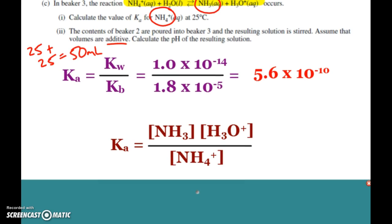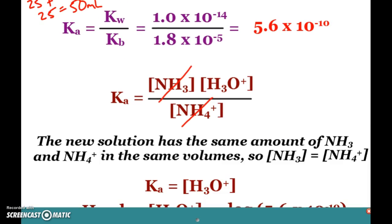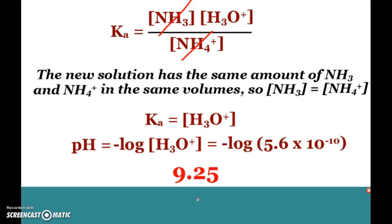My Ka expression says I've got ammonia times hydronium over ammonium. But since we're adding the same amount of ammonia and ammonium, these things are the same and they just cancel out. So essentially that means your Ka equals your hydronium concentration. Because of that, we know we can just simply take the negative log of our Ka here and we get 9.25.